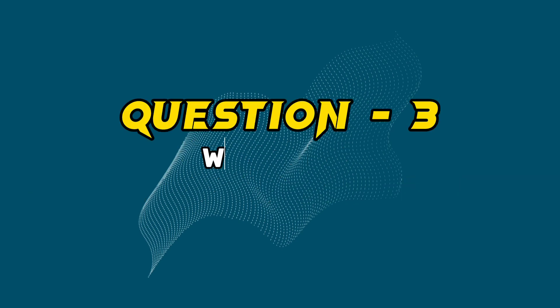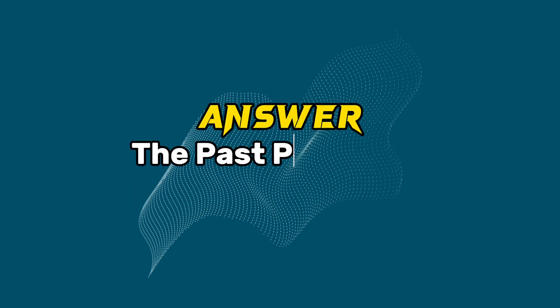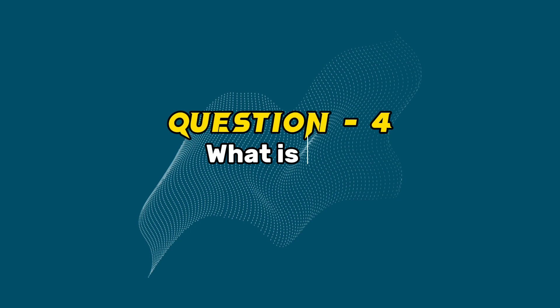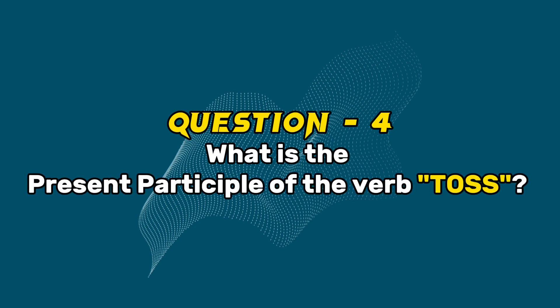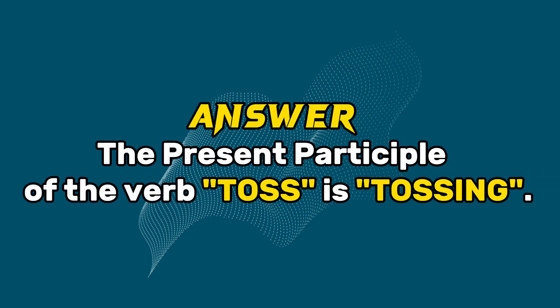Question 3: What is the past participle of the verb toss? Answer: The past participle of the verb toss is tossed. Question 4: What is the present participle of the verb toss? Answer: The present participle of the verb toss is tossing.